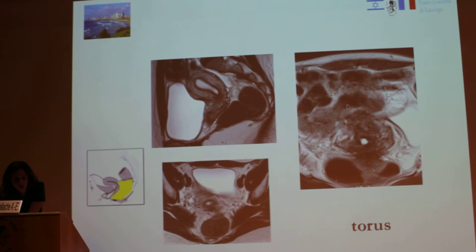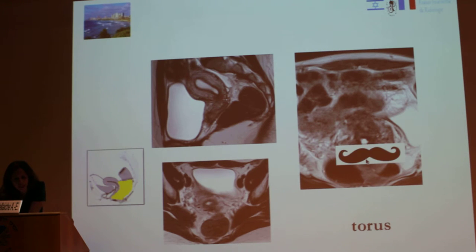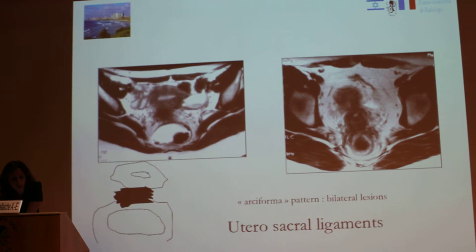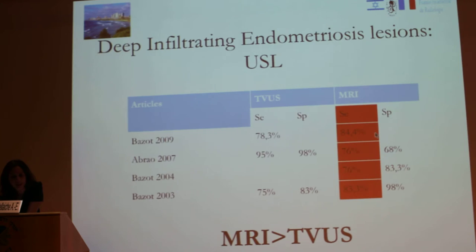The torus uterinum shows a hypersignal T2 lesion typical of endometriosis, like a mustache pattern. Here you can see another example of uterosacral ligament involvement with hypersignal nodules and uterosacral ligament thickening visible on the axial sequence.